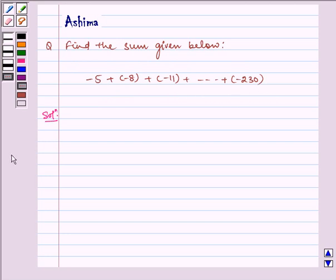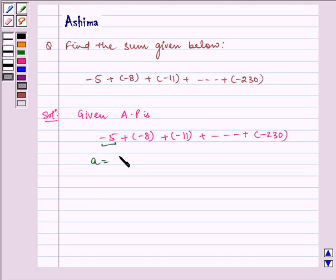Now let us write the solution. Given AP is minus 5 plus minus 8 plus minus 11 so on till minus 230. Now here A is equal to minus 5. D is equal to common difference so minus 8 minus of minus 5, which is equal to minus 8 plus 5 which is equal to minus 3. And AN is equal to the nth term that is minus 230.